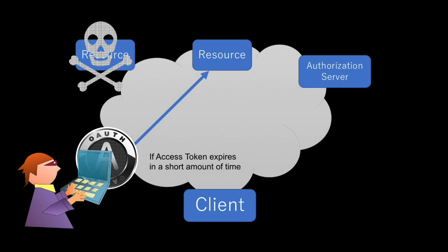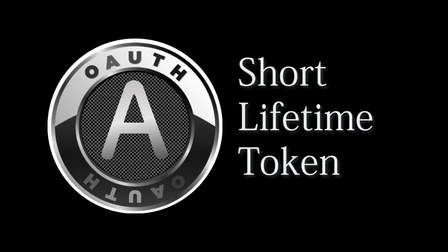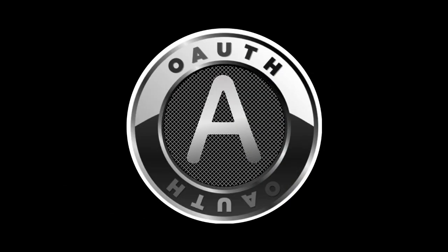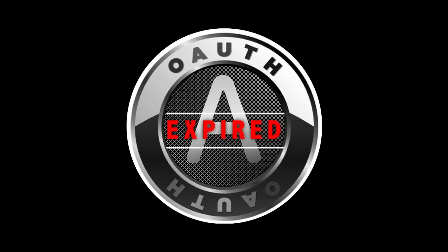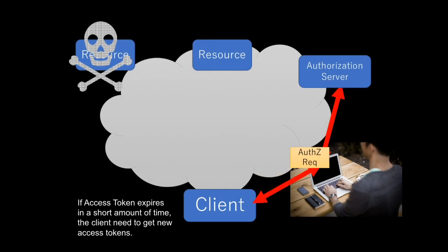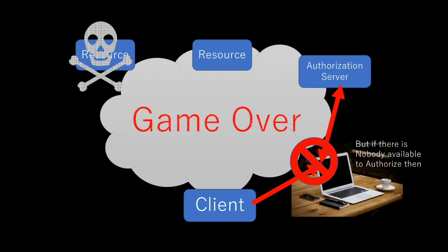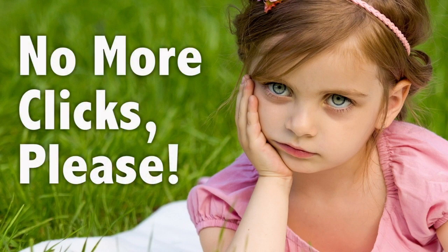To minimize the effect, ACCESS TOKENS typically have a short lifetime so that even if the attacker got hold of one, it will not last. But that causes problems for the client. If there were only ACCESS TOKENS, the client has to make an authorization request to the authorization server, in which the resource owner is involved. If there is no resource owner at the time, that's a problem. Besides, even if there were, it would be too annoying for the resource owner.